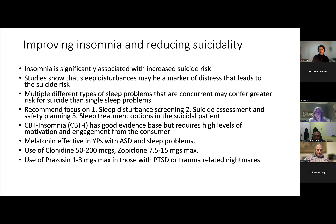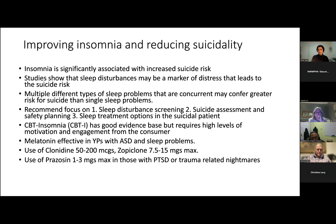There is a form of cognitive behavior therapy called CBT for insomnia, which has a good evidence base, but requires motivation and engagement from the consumer. Melatonin can be effective in young people, particularly with ASD sleep problems, but also in neurotypical kids. There's clonidine, zopiclone, and prazosin — which can be used for PTSD-related nightmares at one to three milligrams.